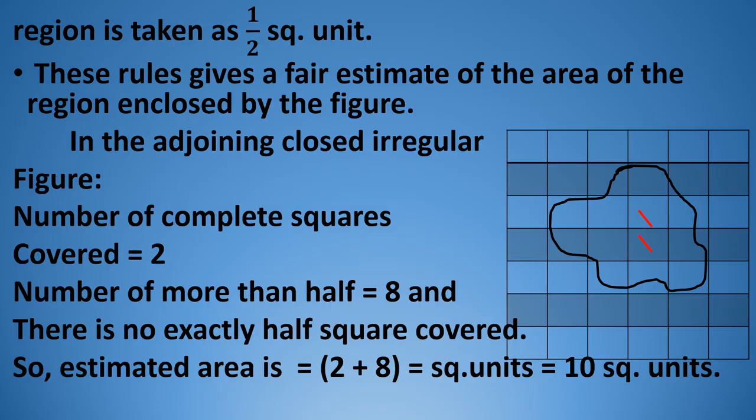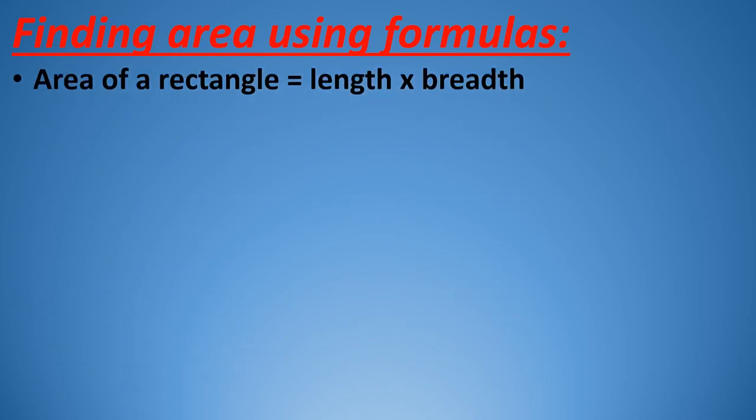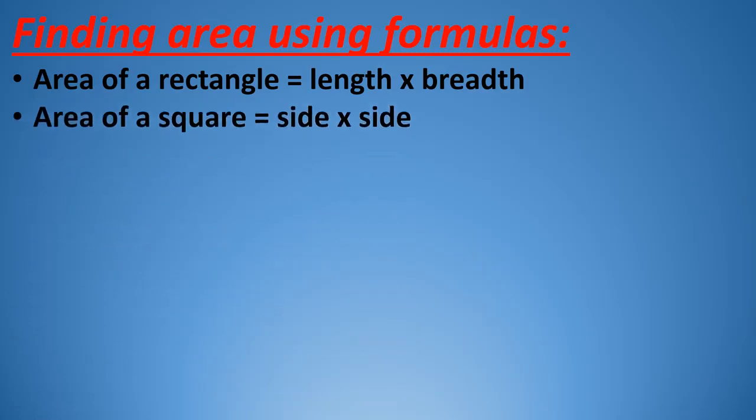Now I am going to tell you how to find out the area using formulas. Area of a rectangle is equal to length multiplied by breadth. Area of a square is equal to side multiplied by side, because all the sides are equal.